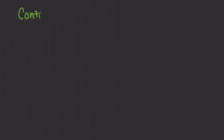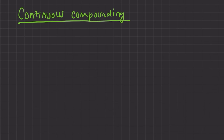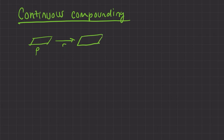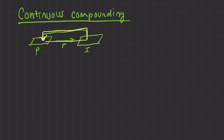Our last topic is continuous compounding — what a cool concept. That cycle we had: you take your principal, get some interest rate, compute some interest amount, and add it back on. We did it once a year, twice a year. What if you did this continuously — instantaneously, infinitely fast compounding? What would happen? Would you have an infinite amount of money? It turns out you wouldn't.